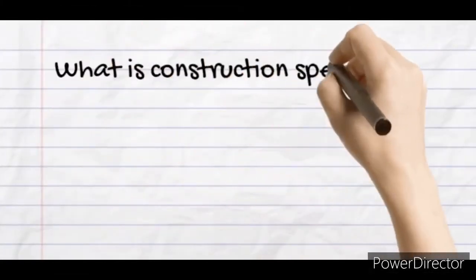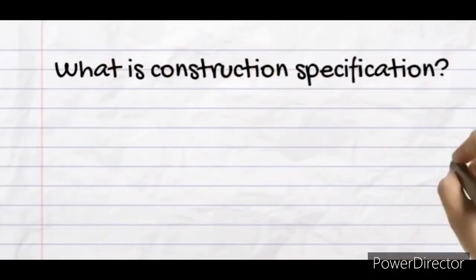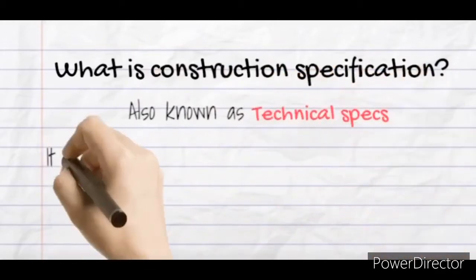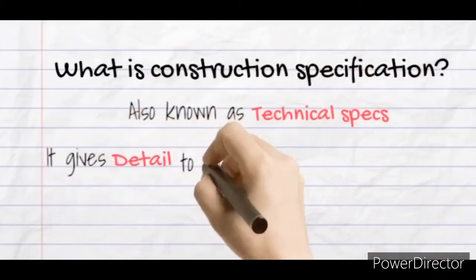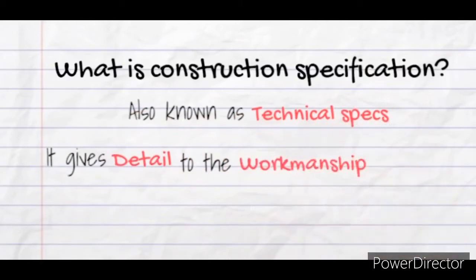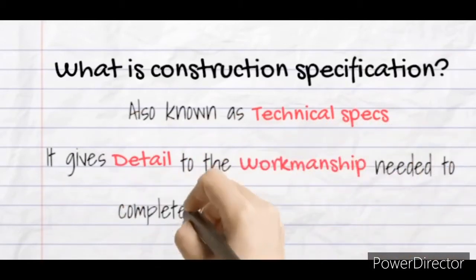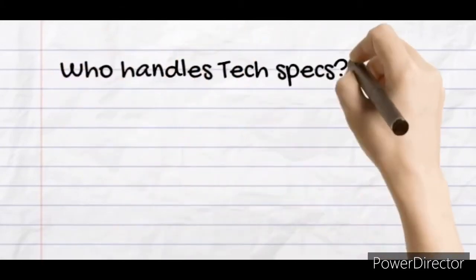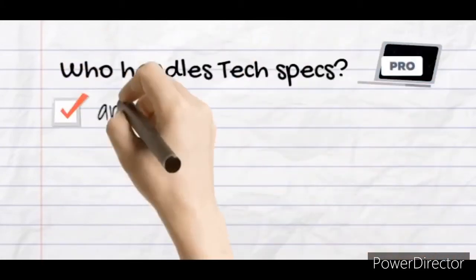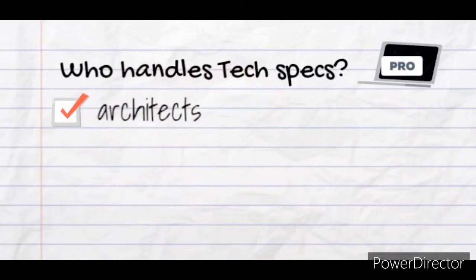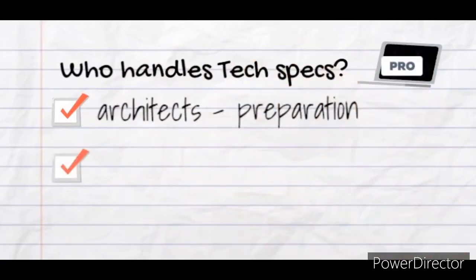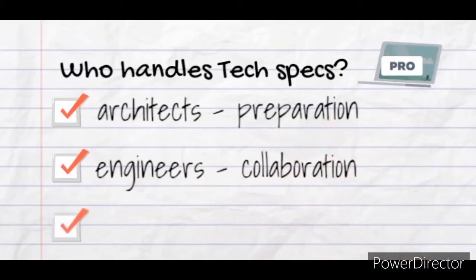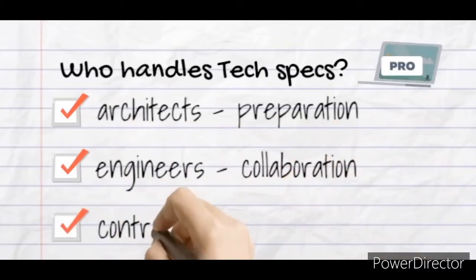What is construction specification? It is also known as technical specification — it gives detail to the work and workmanship needed to complete a construction project. Who handles technical specifications? Usually specs are prepared by the architects in collaboration with the project engineers, due to their breadth of technical knowledge. It will then be handed to the contractors to reflect and translate the specifications to the subcontractors.